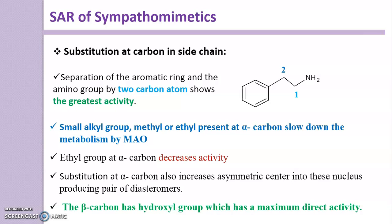The beta-carbon having a hydroxyl group produces maximum direct activity. This hydroxyl group at the beta-carbon — the second carbon — is a general requirement for Sympathomimetic drugs, and its presence produces maximum direct activity.